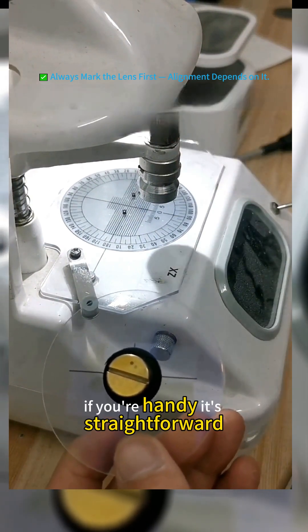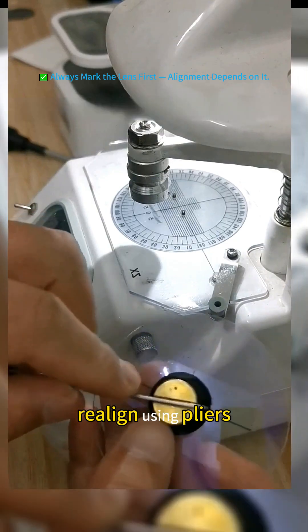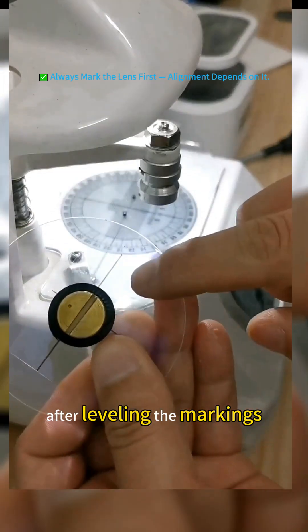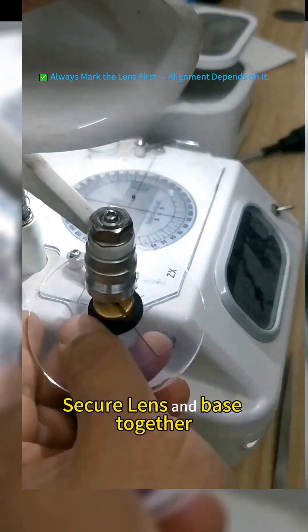If you're handy, it's straightforward. Realign using pliers. After leveling the markings, secure lens and base together.